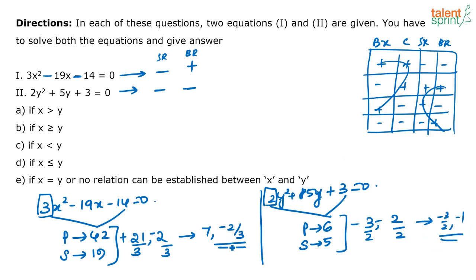So the answer here is option A, x is greater than y. See, if x value is 7, it is definitely greater than these two roots. Similarly, if x is equal to minus 2 by 3, then also it is greater than these two roots.